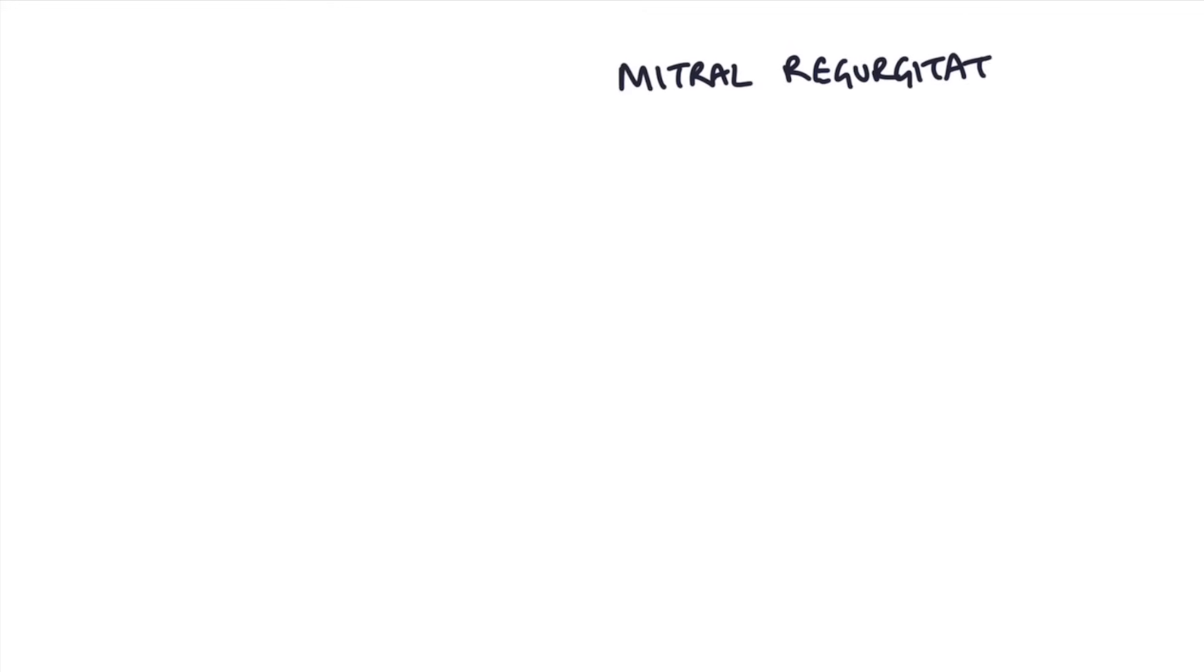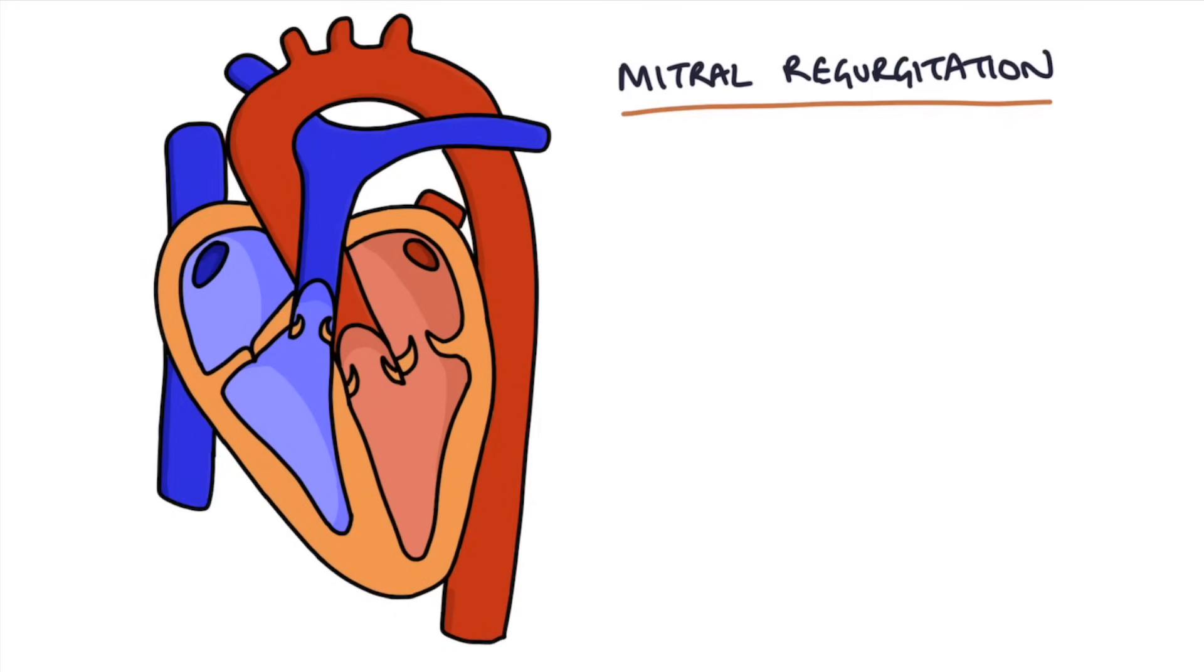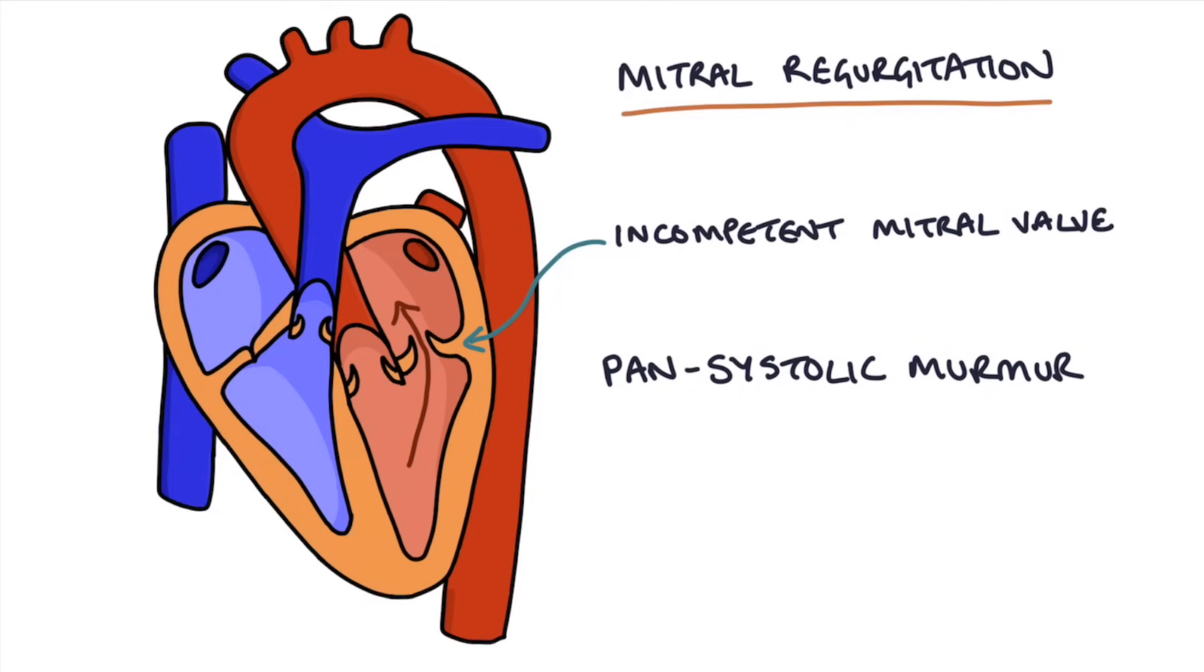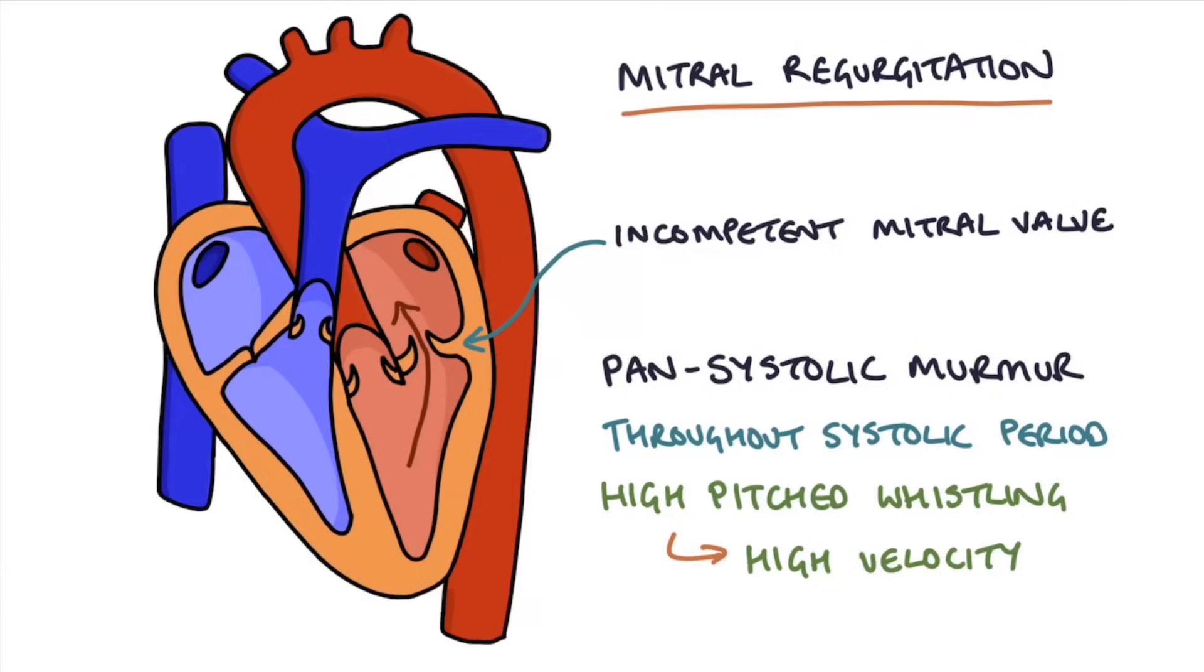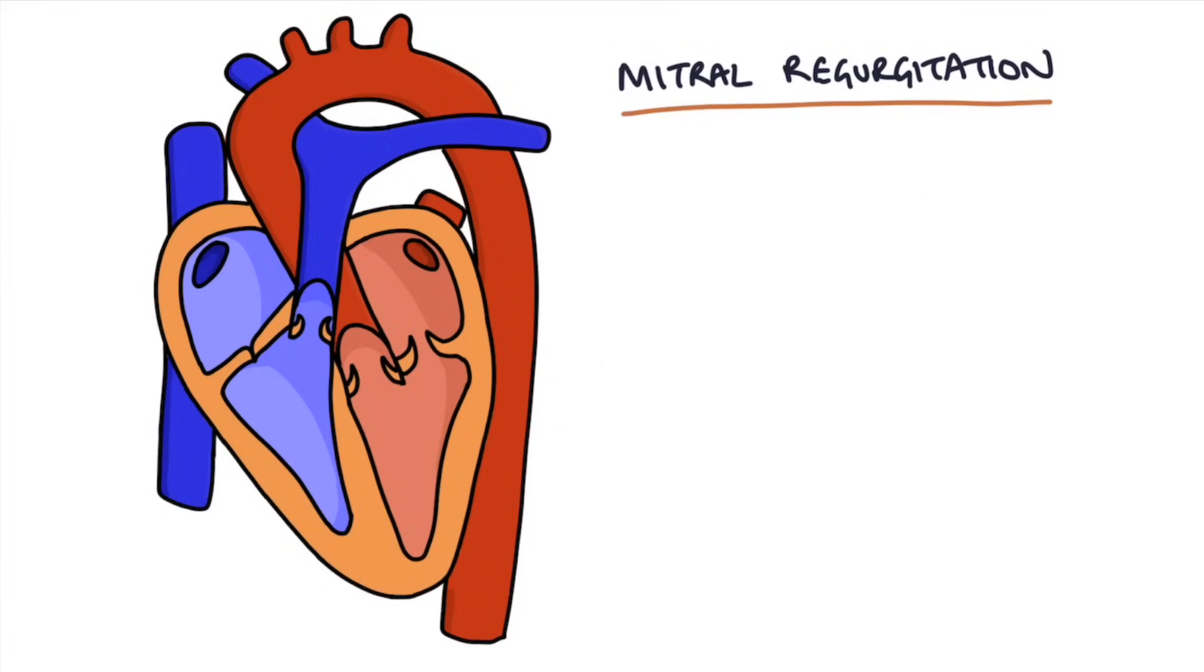The next murmur to talk about is mitral regurgitation. Mitral regurgitation is when an incompetent mitral valve allows blood to flow back through during systolic contraction of the left ventricle. Because during systole there's blood flowing backwards through this valve, you end up with something called a pansystolic murmur, meaning the murmur is present throughout the systolic period, and it causes a high-pitched whistling murmur due to the high velocity of blood flow through the leaky valve. This murmur sounds a bit like brrr, brrr because it happens the entire way through systole. Let's have a listen.